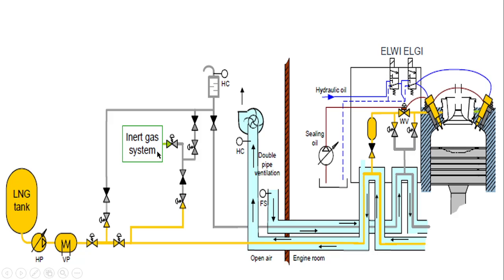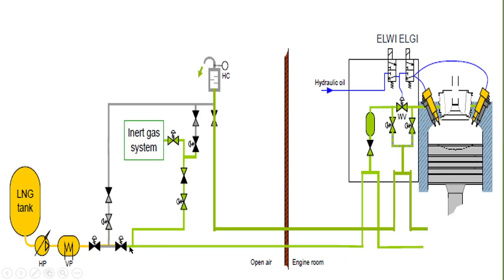An inert gas system is also present. Suppose a gas failure takes place and the hydrocarbon sensor detects that one of the pipelines going for gas injection is leaking and the sensor detects it is more than 60% of LEL. It will give an alarm, and the whole system will shut down. After that, the gas valve will stop and the gas flow will be completely stopped, followed by the inert gas system — the inert valve will get activated, the inert gas will flow inside the pipeline and purge the remaining gas, and after that it will be blown off by air.